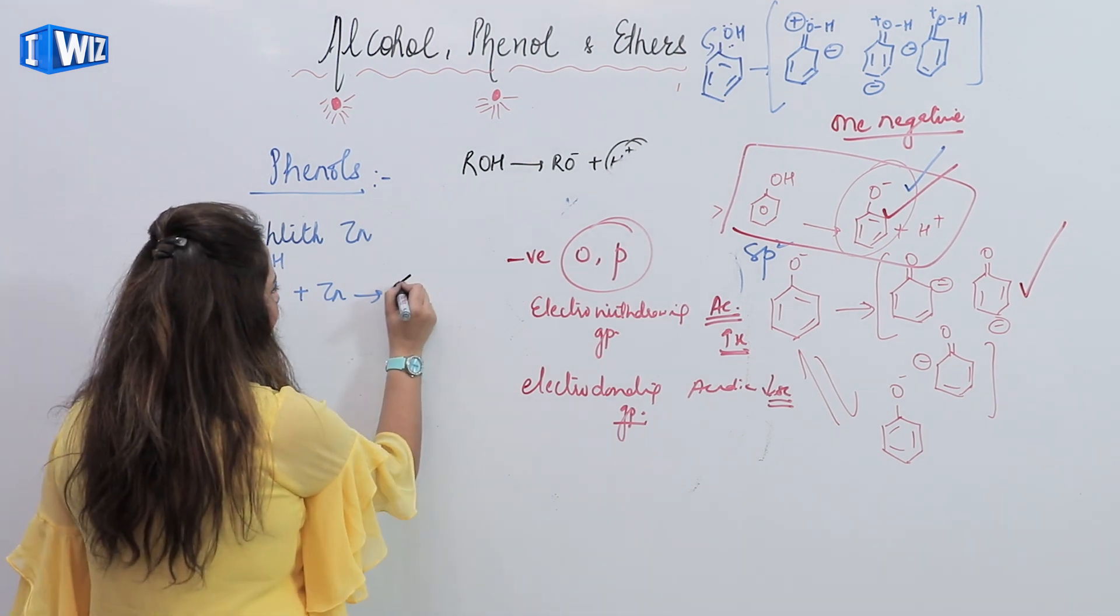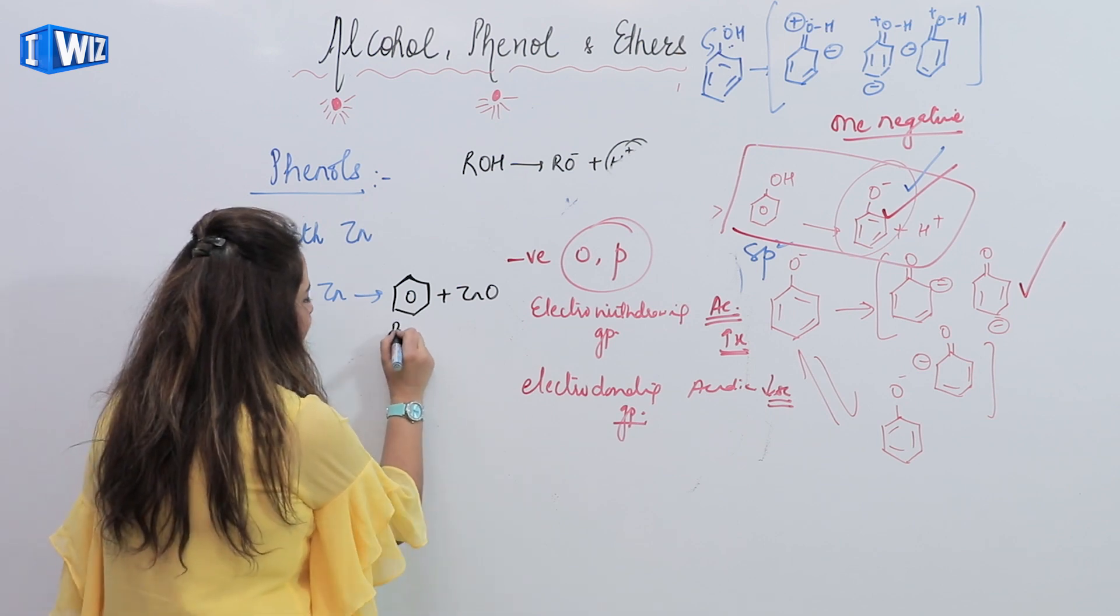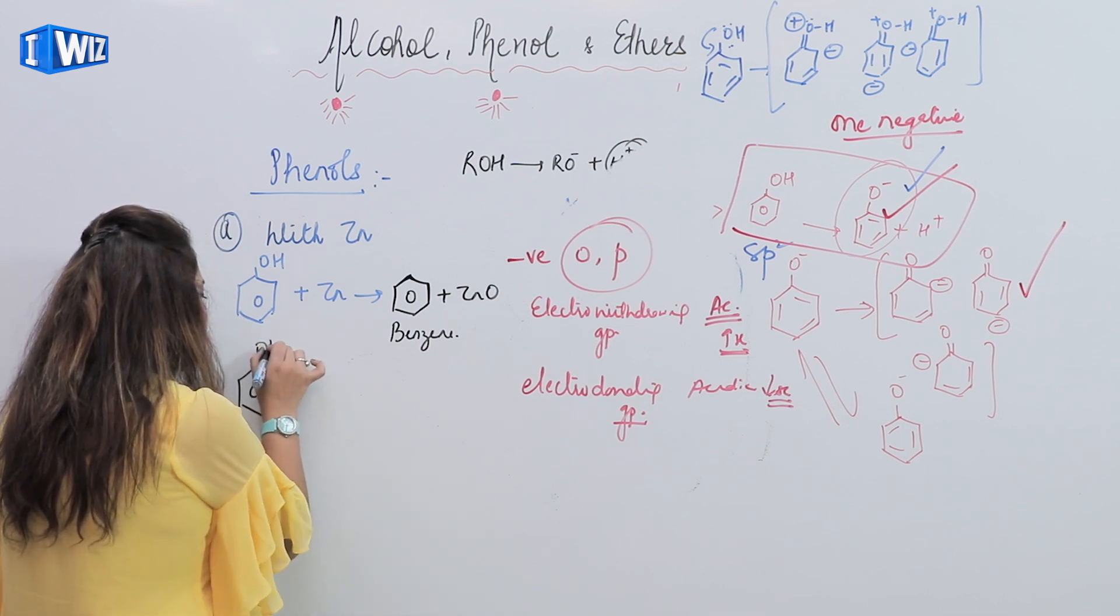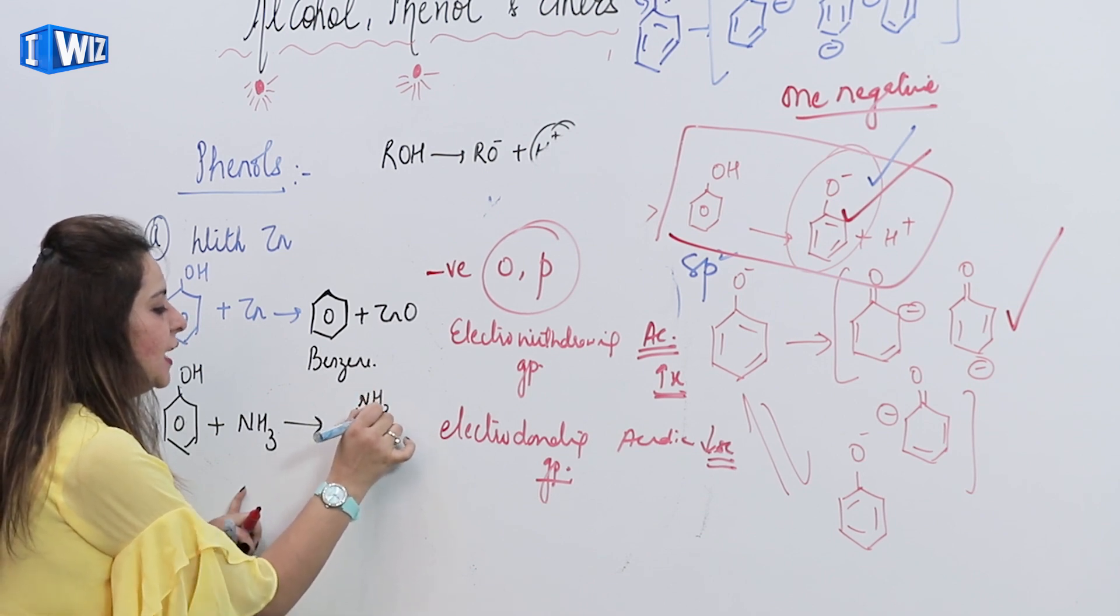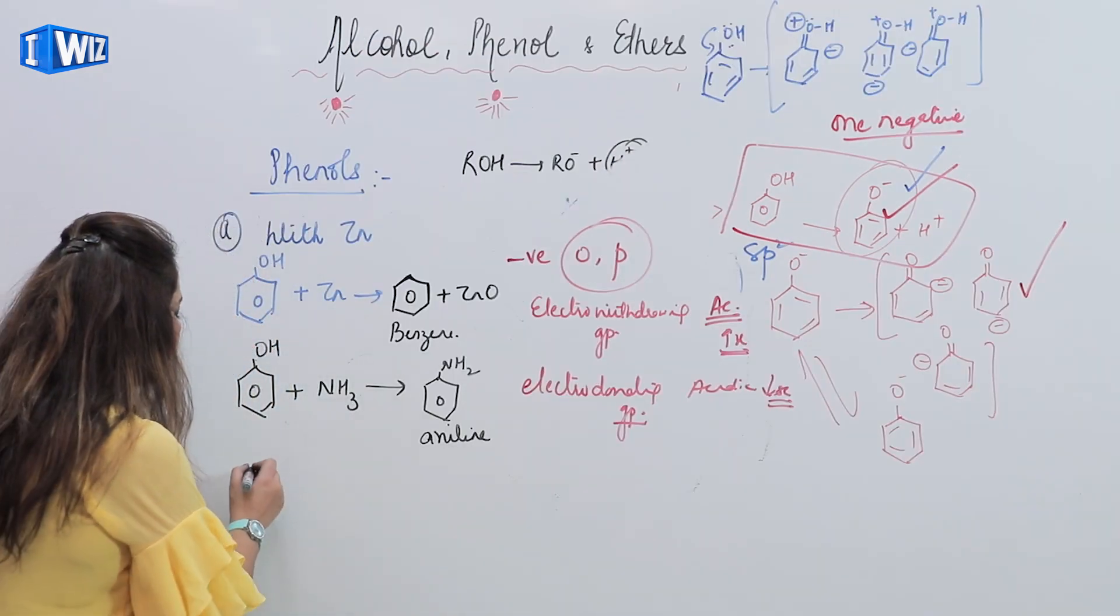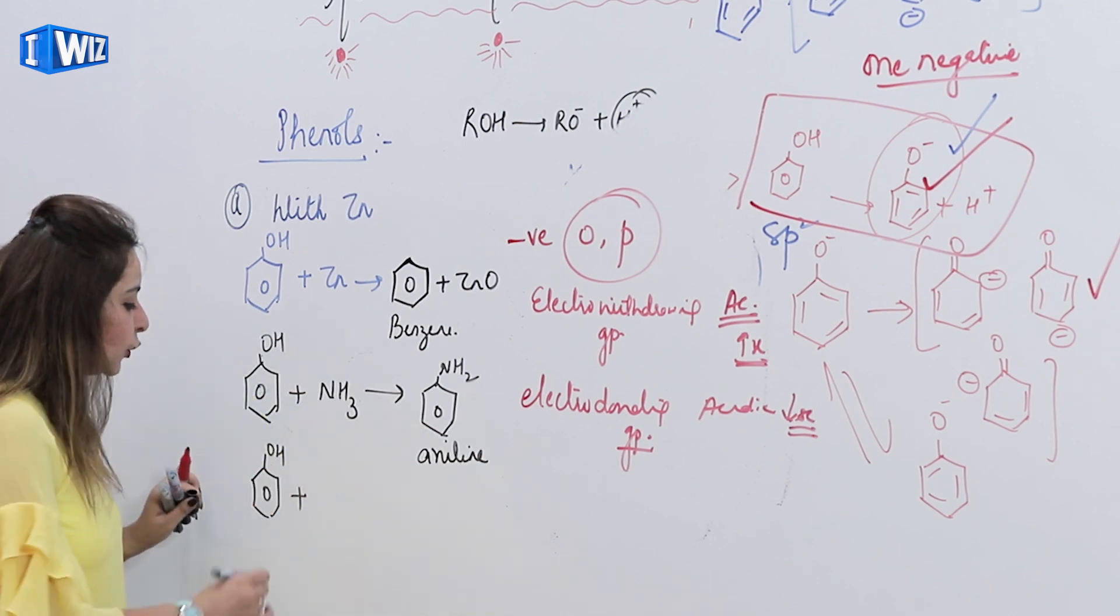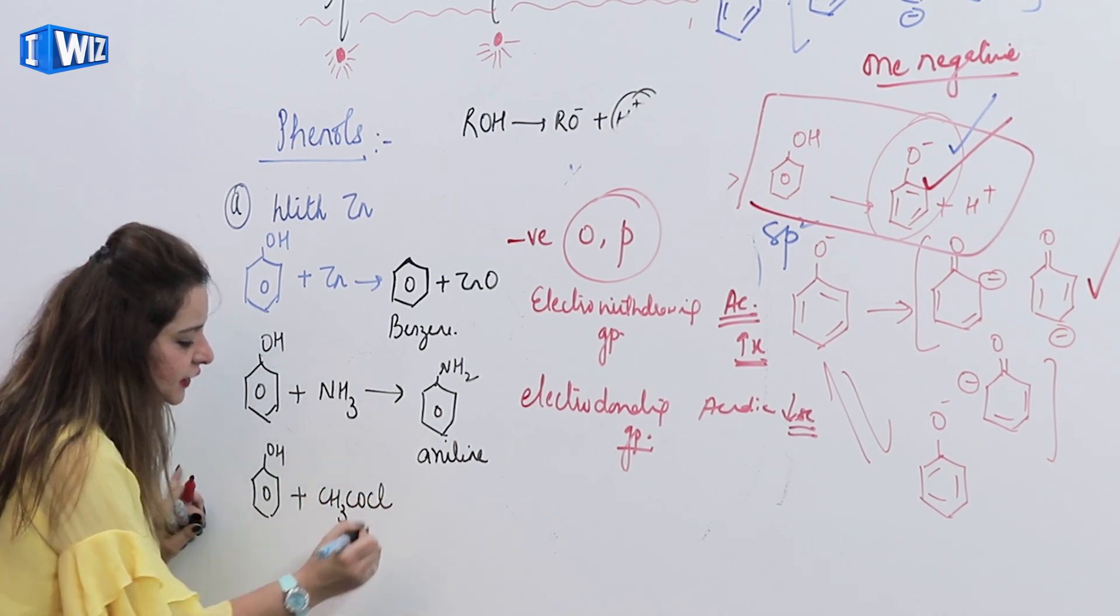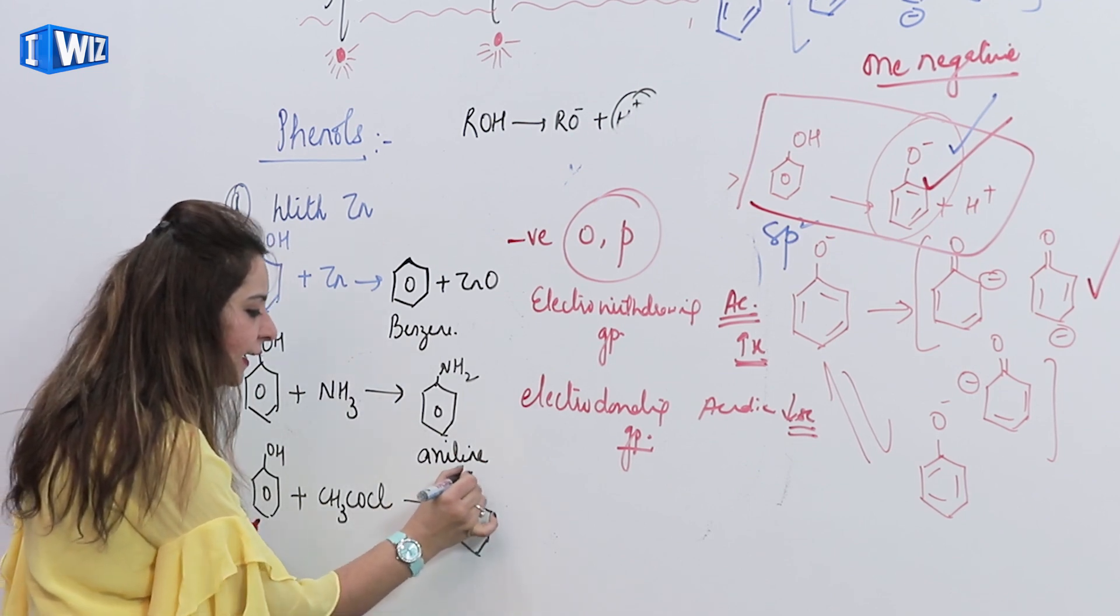So this means if ortho and para position have electron withdrawing groups, the acidic strength will decrease, and electron withdrawing groups as deactivators will increase. Let's see some reactions. First reaction where we react with zinc. When phenol reacts with zinc, we will get benzene and zinc oxide. Next reaction with ammonia - phenol reacts with ammonia, it will lead to the formation of aniline.